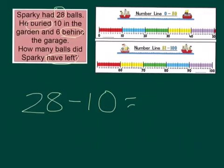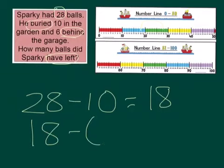Let's use the number line or you could just use your head and count back 10. So starting at 28, count back 10 would make us land on 18. So after burying 10, he had 18 left. Then he hid six behind the garage. So he had 18 and then he hid six. So take away six. How many does he have left?